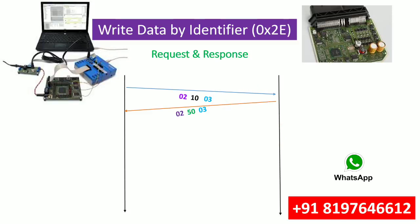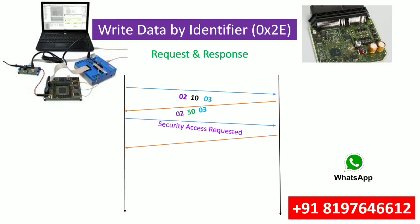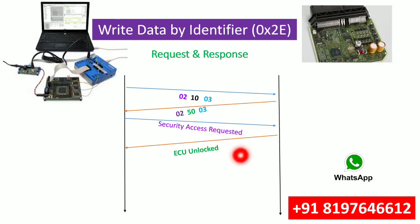Because I cannot explain everything like Extended Session and Security Access here again, please go back to the previous tutorials if you haven't watched them. After the Extended Session is acknowledged with a positive response, we request Security Access, and the ECU acknowledges that security is unlocked.